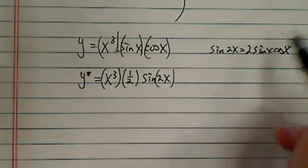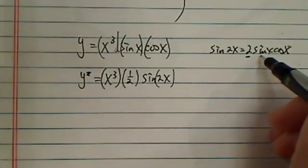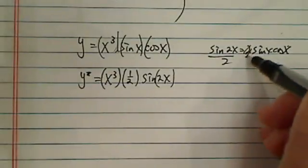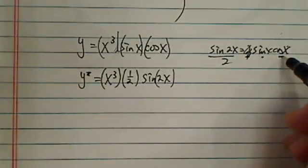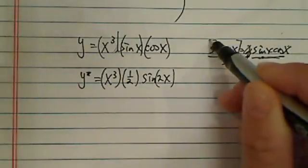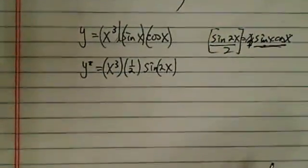Another way to think of it: divide by 2 on this side. Then you have sin(x)cos(x) equals sin(2x) over 2.